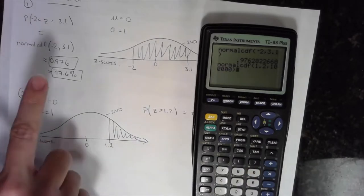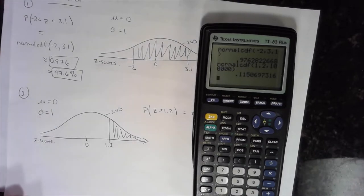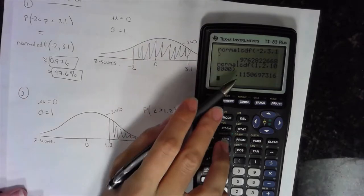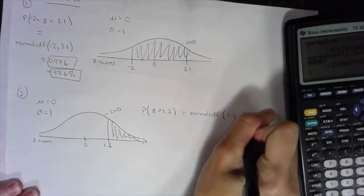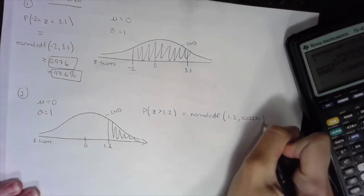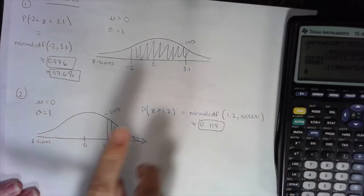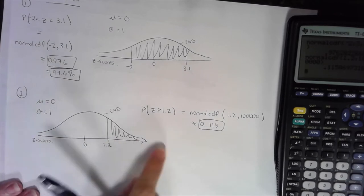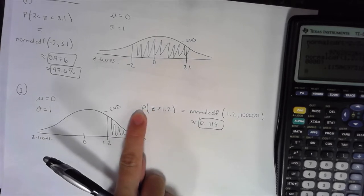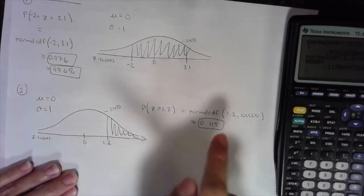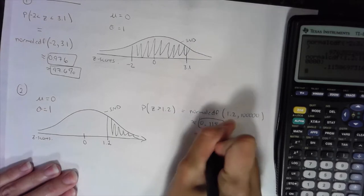For those with the TI-84 that asks for mean and standard deviation: mean is 0, standard deviation is 1. So normalcdf(1.2, 100000) gives approximately 0.115. The shaded region's area is 0.115, or the probability that I randomly choose a z-score and it's greater than 1.2 is 0.115, or 11.5% in percentage form.